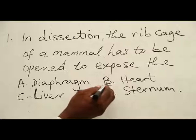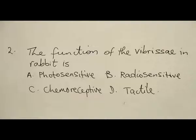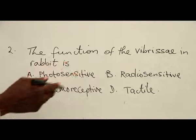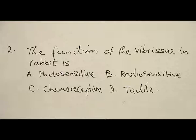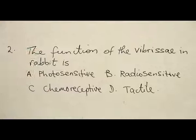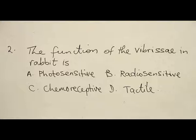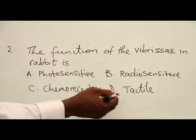So option B is the answer. The function of the vibrissae in a rabbit is: A, photosensitive; B, radiosensitive; C, chemoreceptive; and D, tactile. Vibrissae is another name for whiskers — the whiskers of rabbits. We know that the rabbit uses the whiskers to trace its path inside a dark tunnel, because immediately it touches the wall of the tunnel, it will know that the wall is there. So the answer is D, tactile — sensitive to touch.